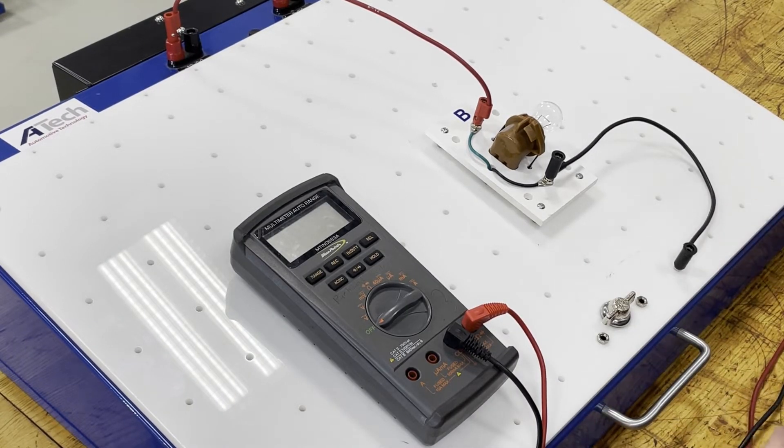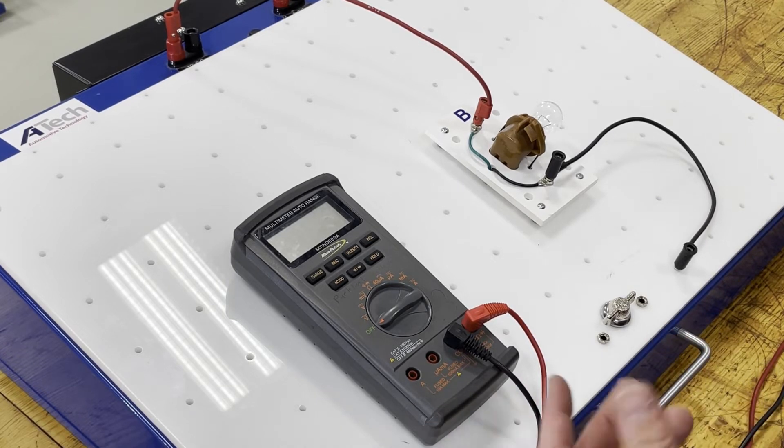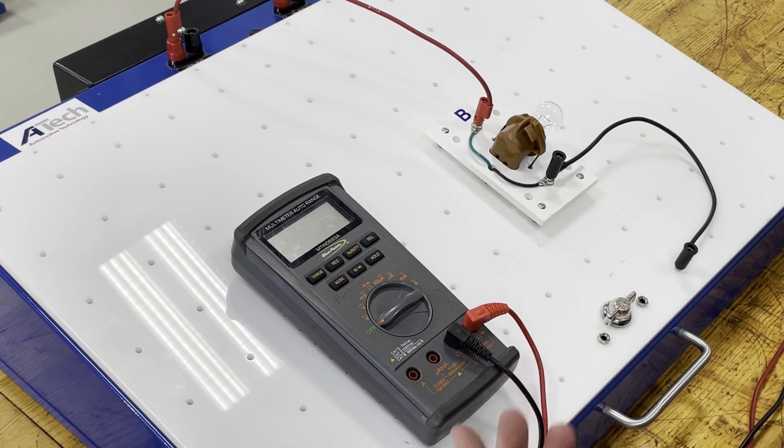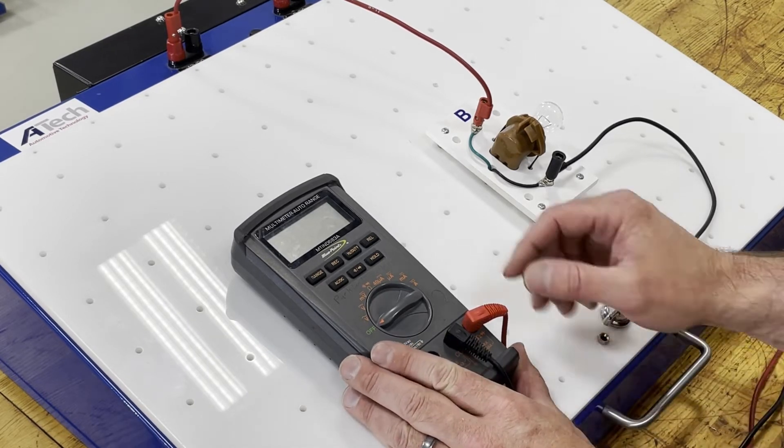So first major measurement that I'm going to need to take is probably going to be voltage and so this meter can do AC and DC volts. So first I've got to make sure that I select the correct one.